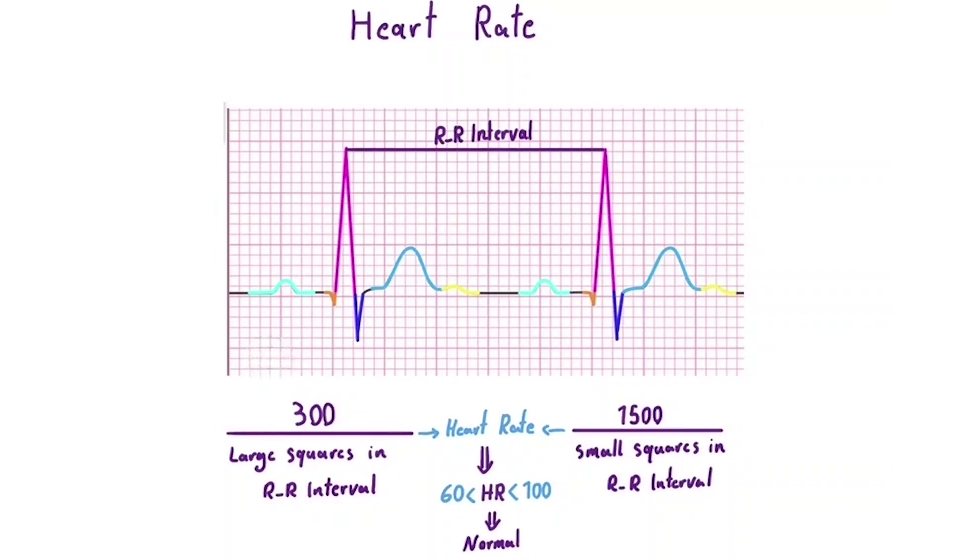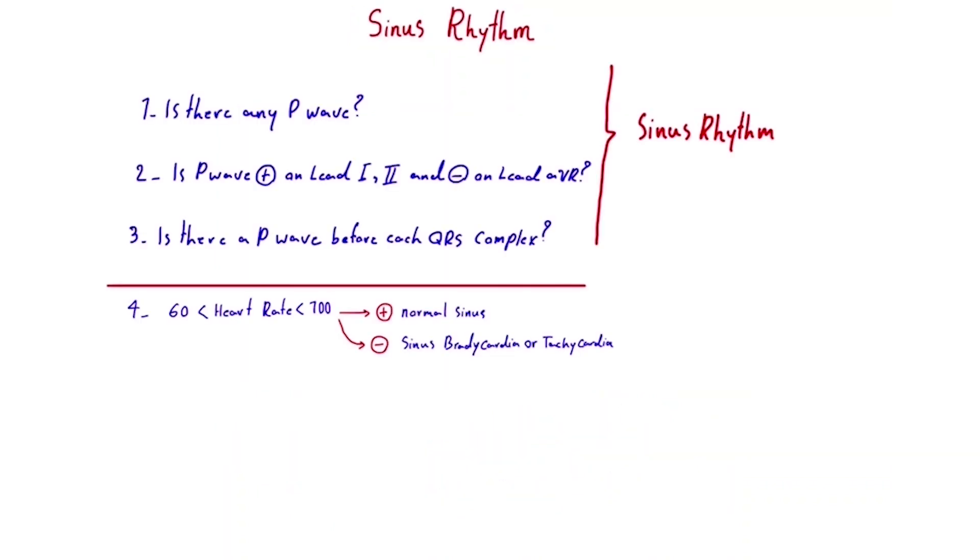So now we can clearly see why these questions matter. By answering them, we can determine whether the rhythm is sinus or not. But what if, for any reason, the rhythm is not sinus?